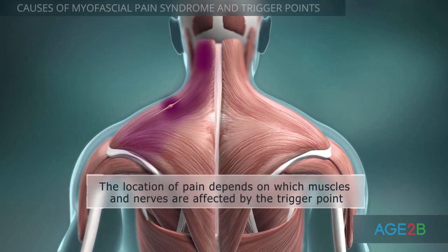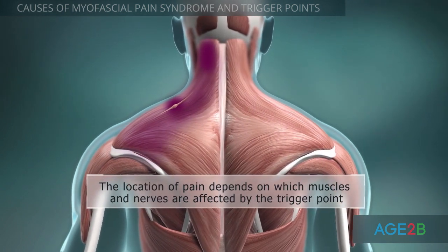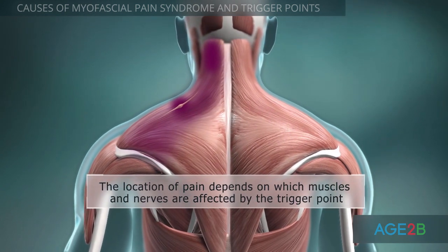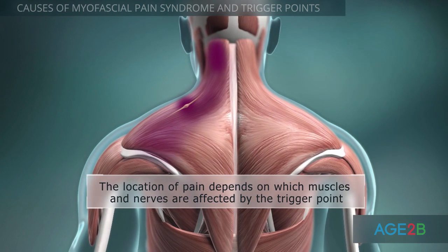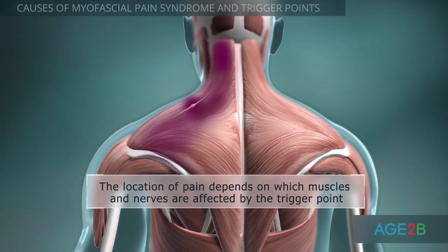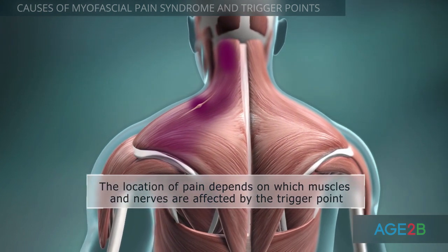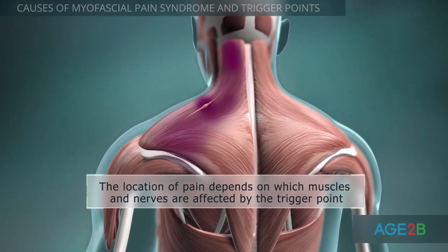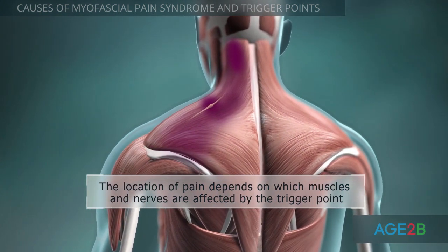Activated pain receptors generate specific referred pain patterns depending on nerve passage and muscle anatomy.